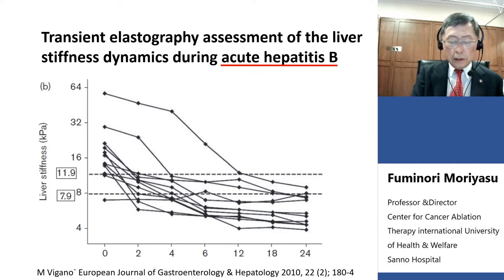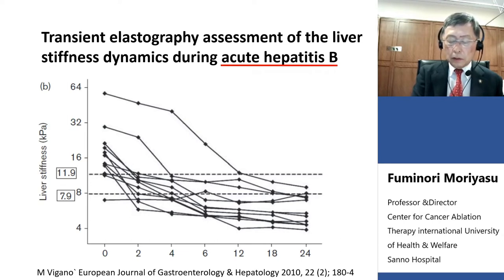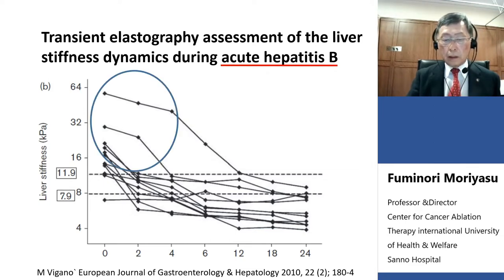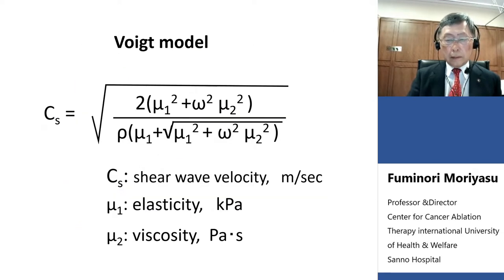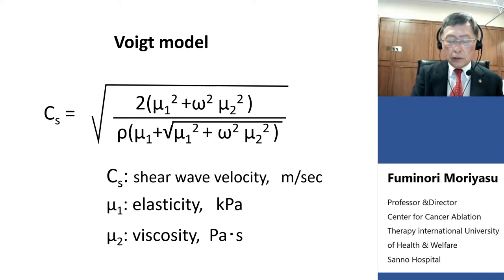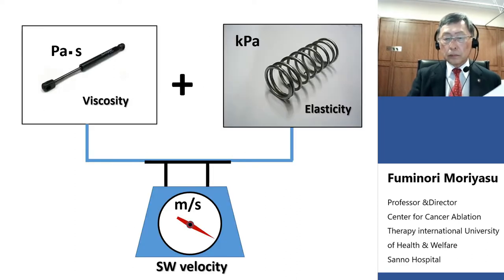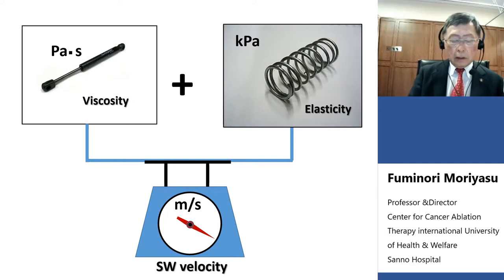In the acute phase, the speed is highest, and in the recovery phase it normalizes. The authors concluded that in this case, the heightened propagation speed is coming from necroinflammation of the liver. From the Voigt model, not only elasticity but also viscosity affects shear wave velocity. Therefore, the measured shear wave velocity should be considered a summation of both elasticity and viscosity.